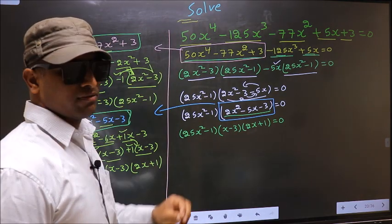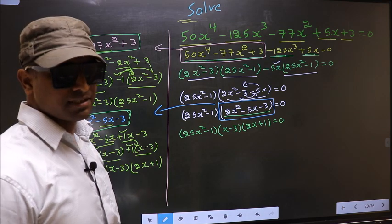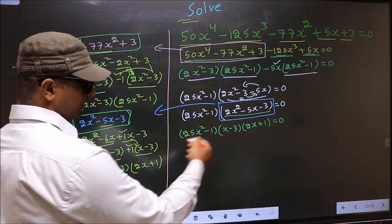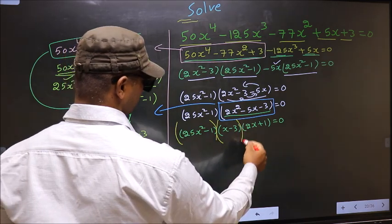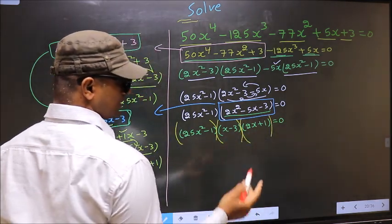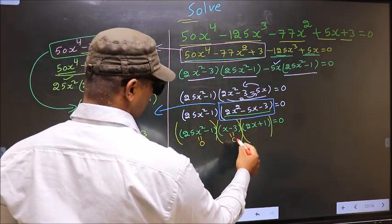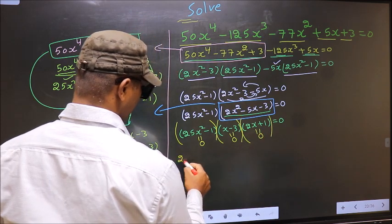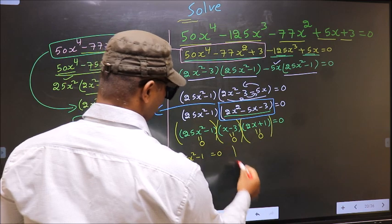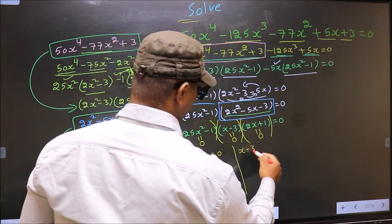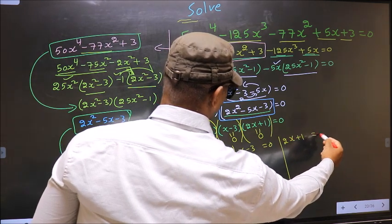We are told to solve, which means we should find the values of x. We have a product of brackets equal to 0, so to get the x values we equate each bracket to 0: 25x² minus 1 equal to 0, x minus 3 equal to 0, and 2x plus 1 equal to 0.